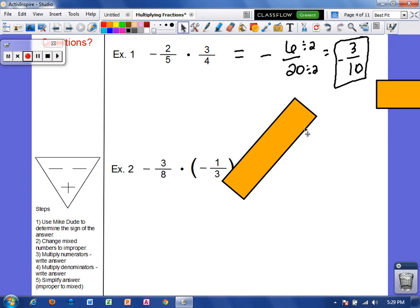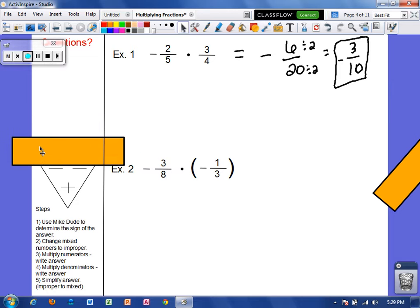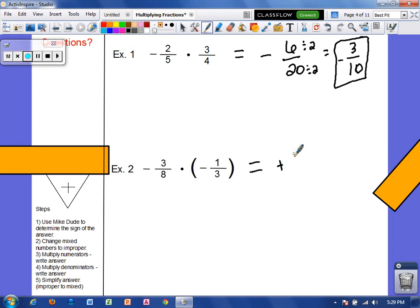Alright. Example two, we have negative three eighths times negative one third. I have a negative times a negative. So I'm going to use MikeDude. And we see that our answer should be positive. So even though with a positive answer we don't put plus signs, I'm going to put a little plus here just so we don't forget our answer should be positive. Now, we don't have mixed numbers to change, so we move on to multiplying numerators. Three times one is three, and eight times three is 24 for our denominators. So I have a positive three over 24. This can be reduced. We can divide top and bottom by three. So I get a positive one over eight.